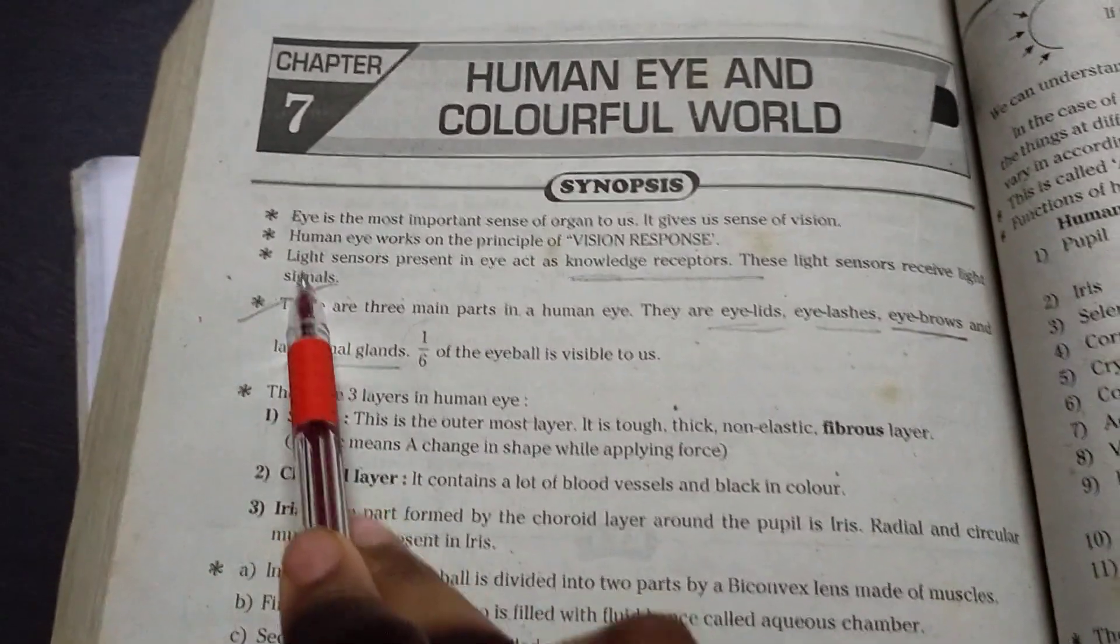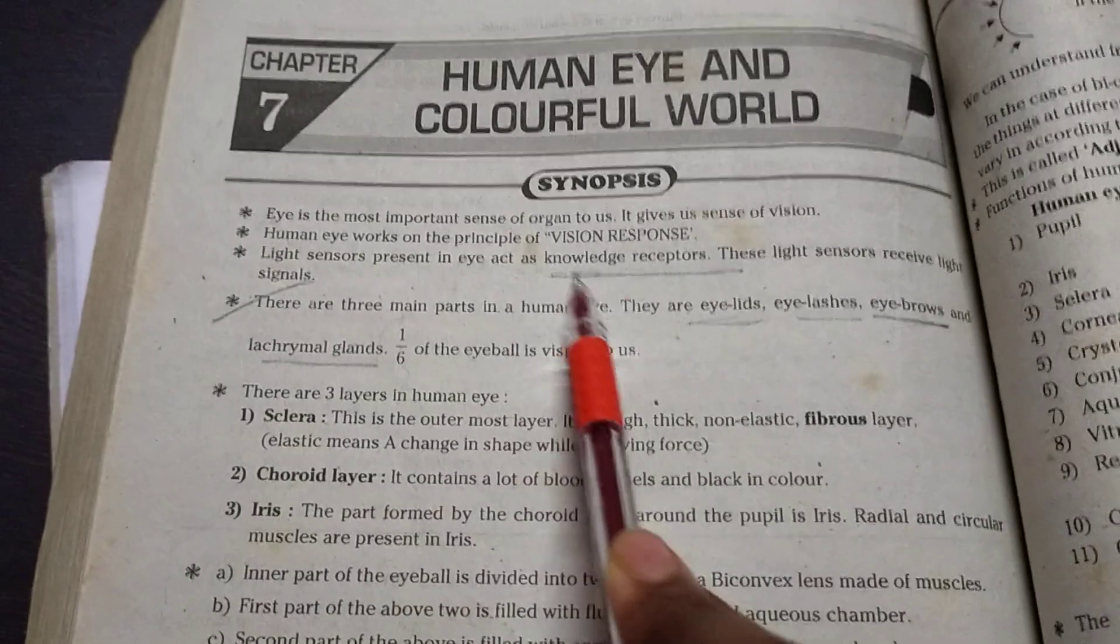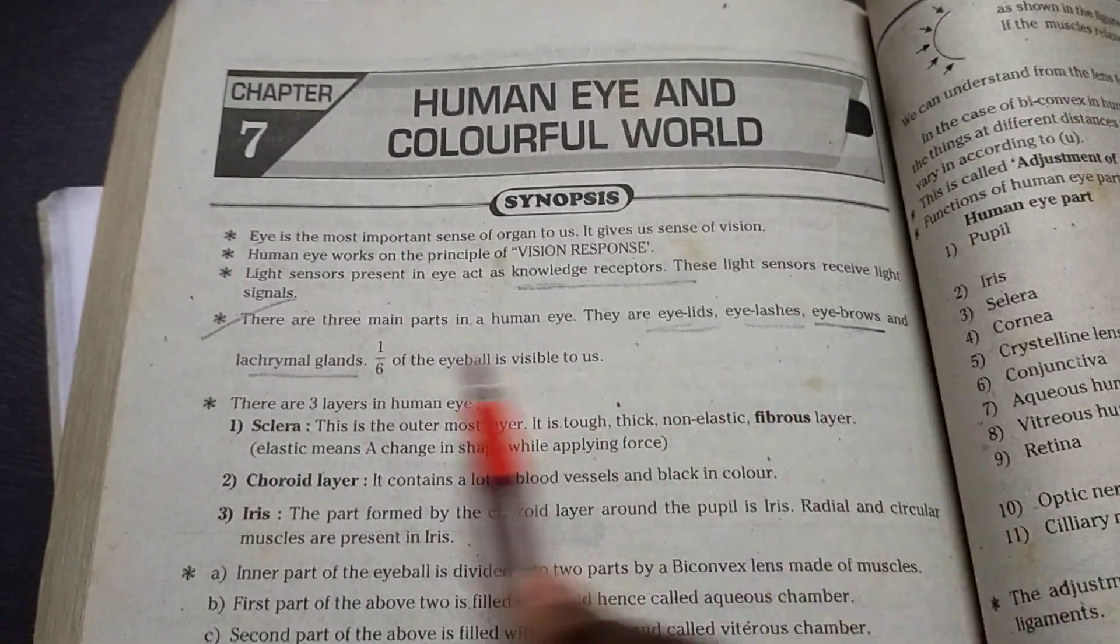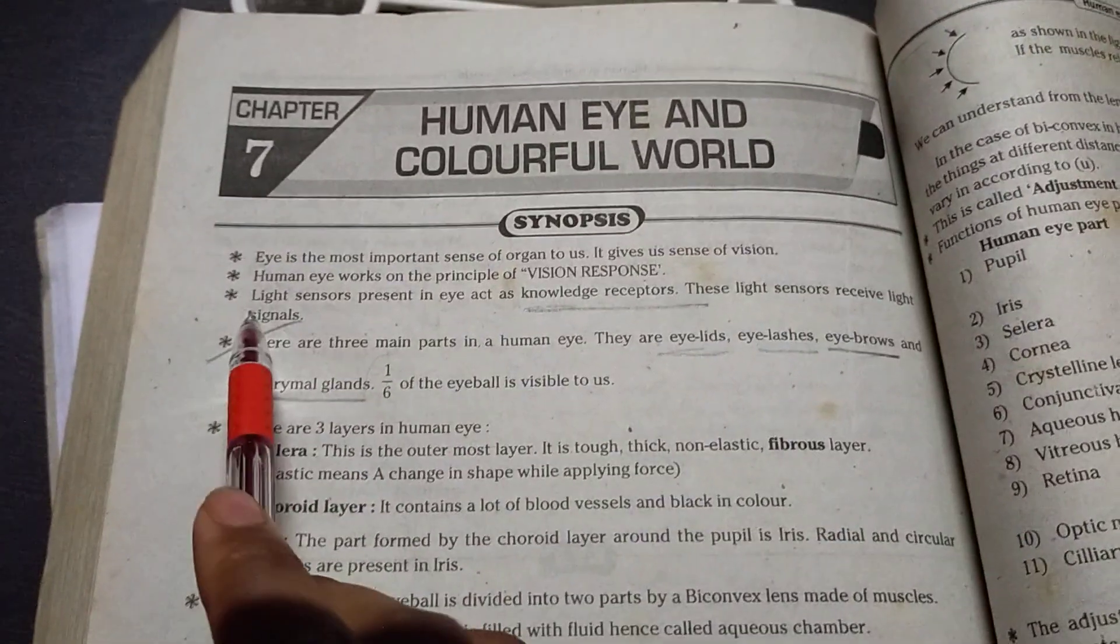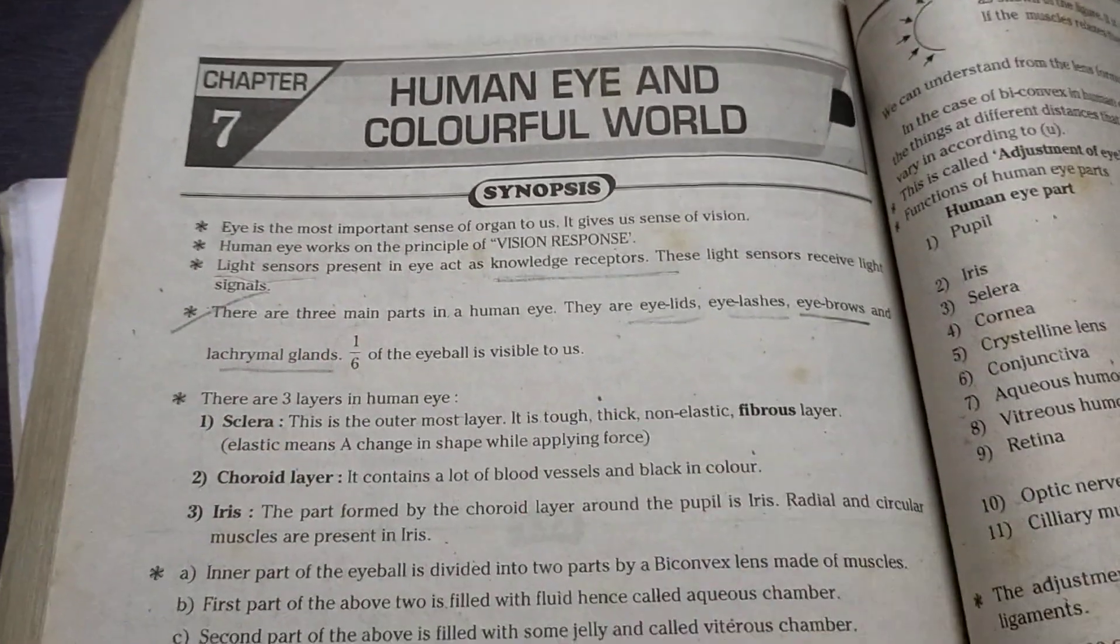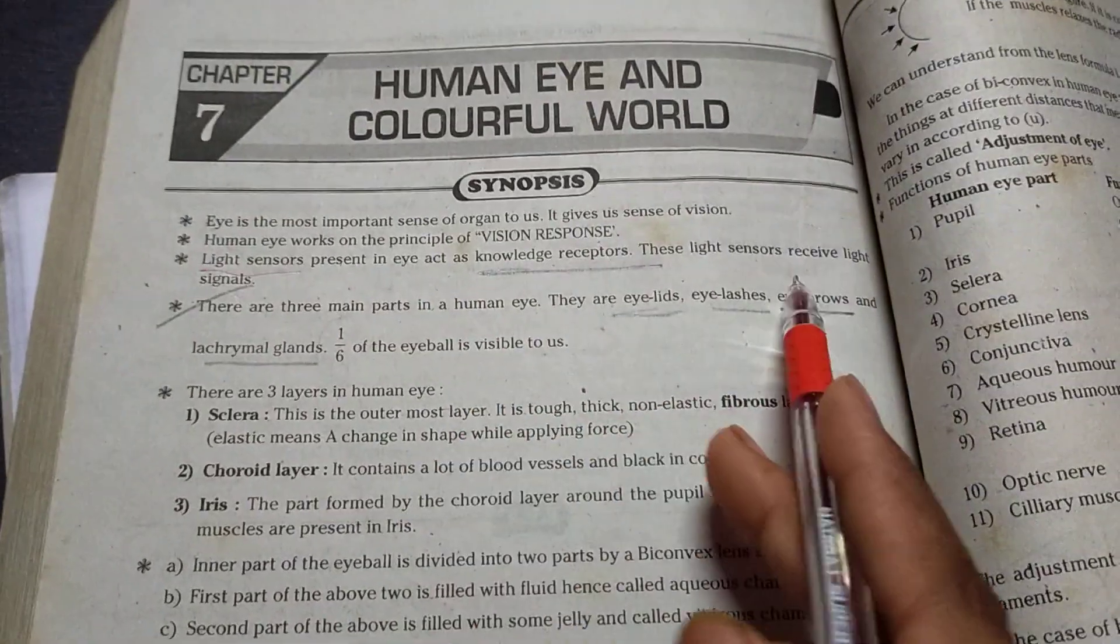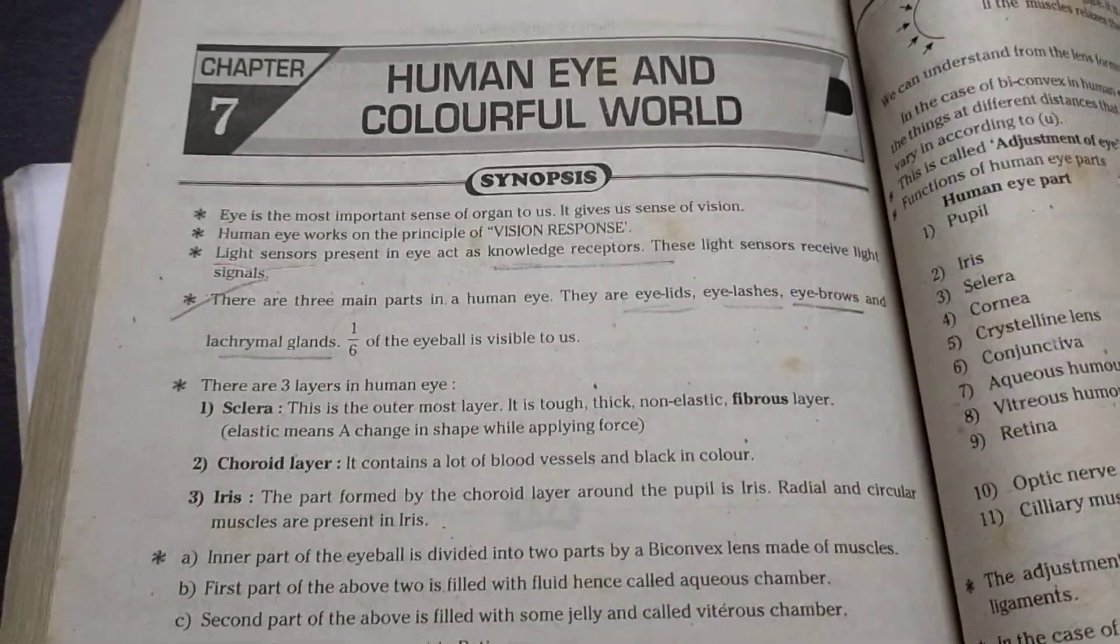Light sensors present in eye act as knowledge receptors. These light sensors receive light signals. So guys it's very important light sensors which is there in our eye which can get reflected again and we can able to see any object.